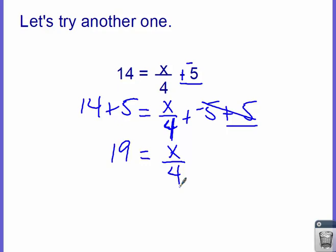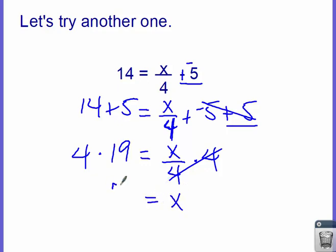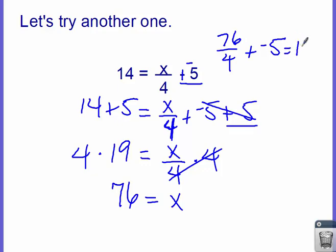Now how do we get rid of a divide by 4? Well, we do its opposite. The opposite of divide is multiply, so I do a multiply by 4 on both sides. These 4s divide out, become 1x equals, and 4 times 19 gives me 76. And again, I can plug that 76 back into the original equation: 76 divided by 4 plus negative 5 — does that equal 14? Yes, it does.